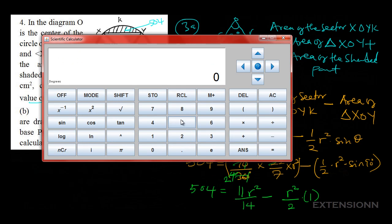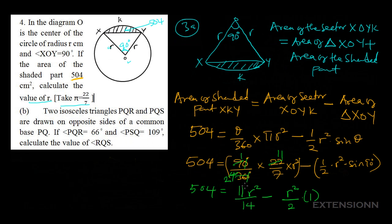We can verify sine 90 equals 1 with a calculator. So we have 504 equals 11R squared over 14 minus R squared over 2. We need to find the LCM of 14 and 2.